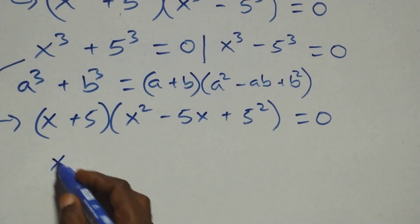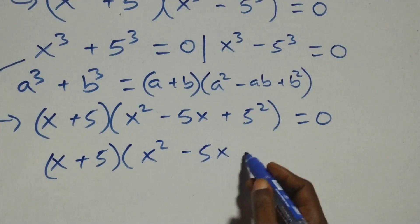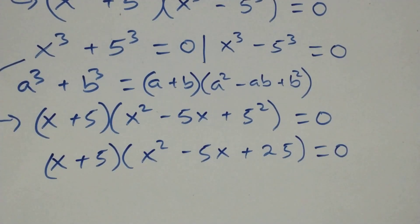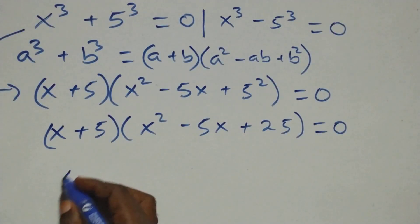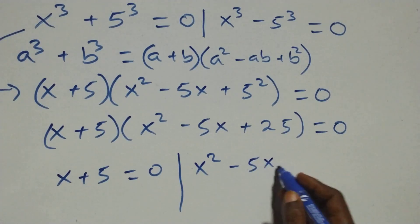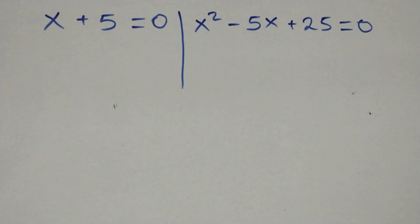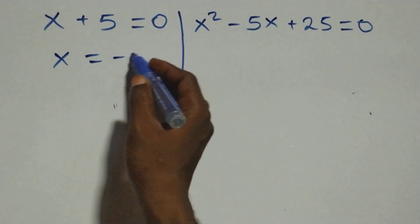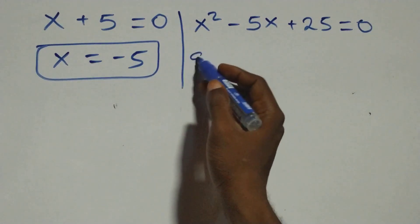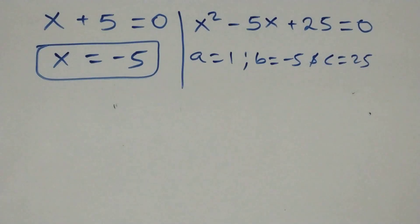This is the same as x plus 5 into bracket x squared minus 5x plus 25, equals to zero. We have two possible cases: first one, x plus 5 equals to zero, or x squared minus 5x plus 25 equals to zero. Solving the first case, we have x equals to minus 5, which is a real solution. For the second, we have a quadratic equation with a equals 1, b equals minus 5, and c equals 25.